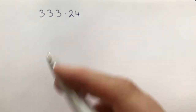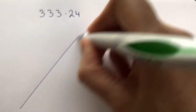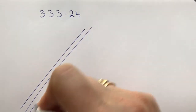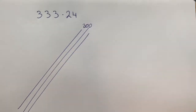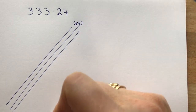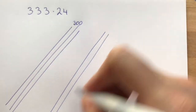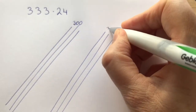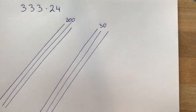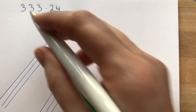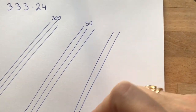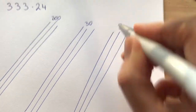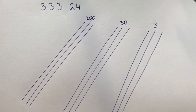If we were to start with 333, what we do is we draw our lines. The first three lines represent 300. The next set of three lines represent 30 — our tens — and then our units of three lines. So here we are representing the number 333 with lines.